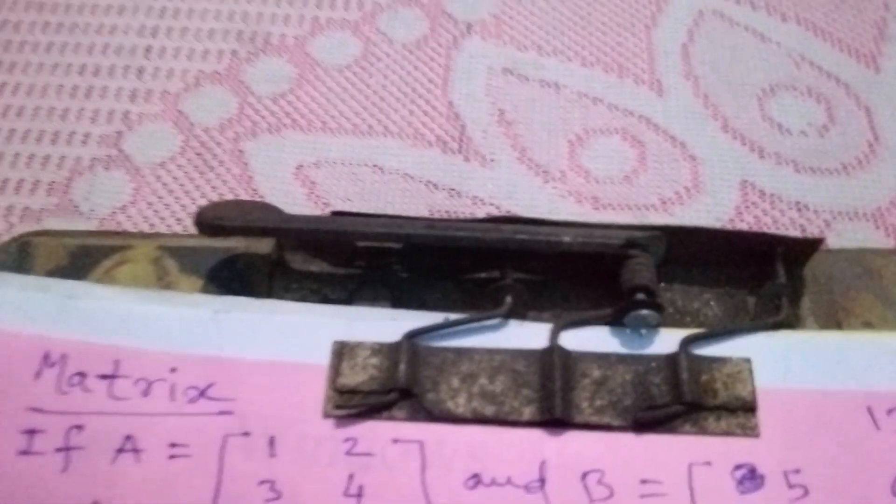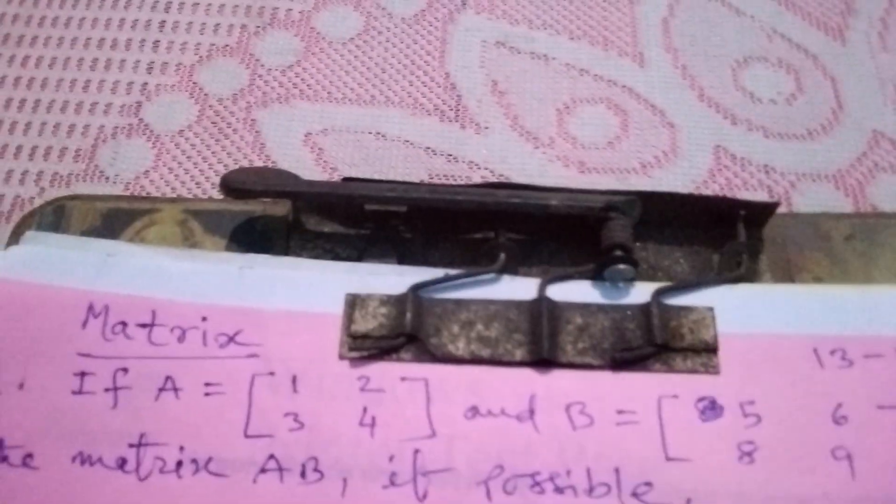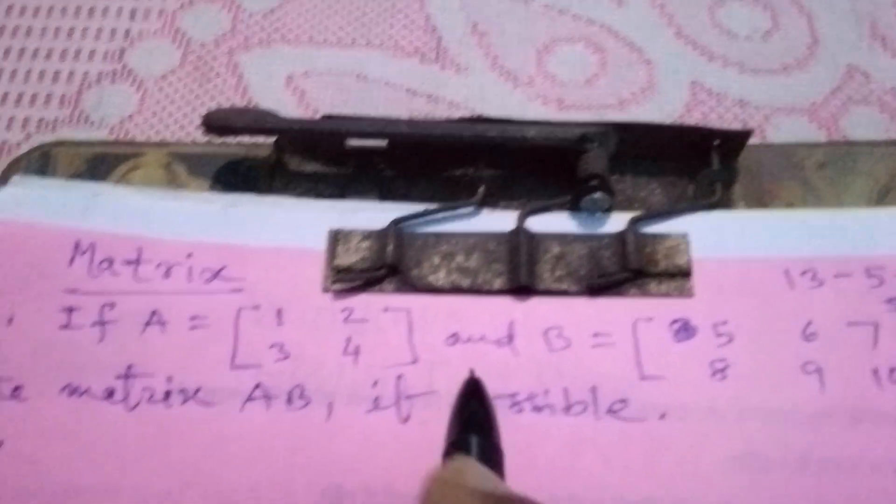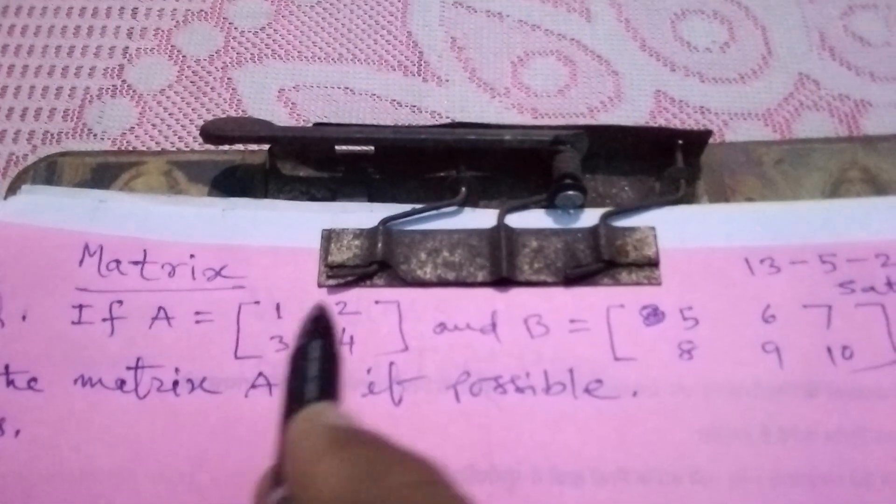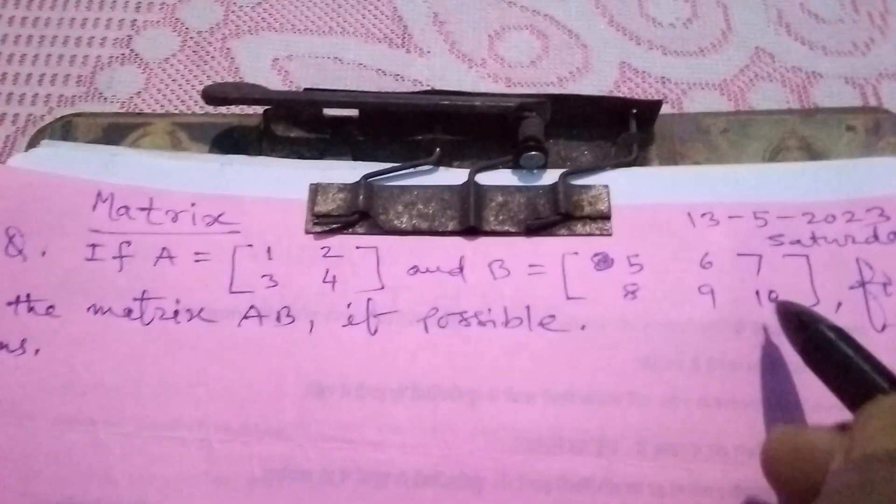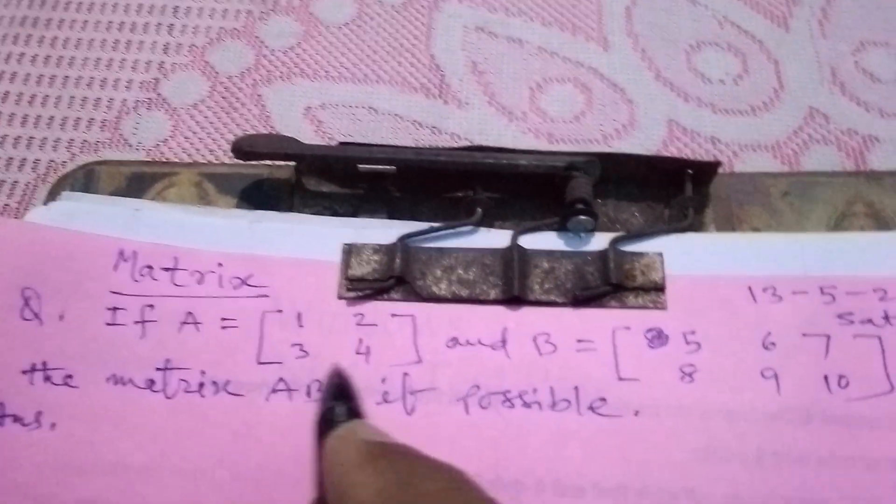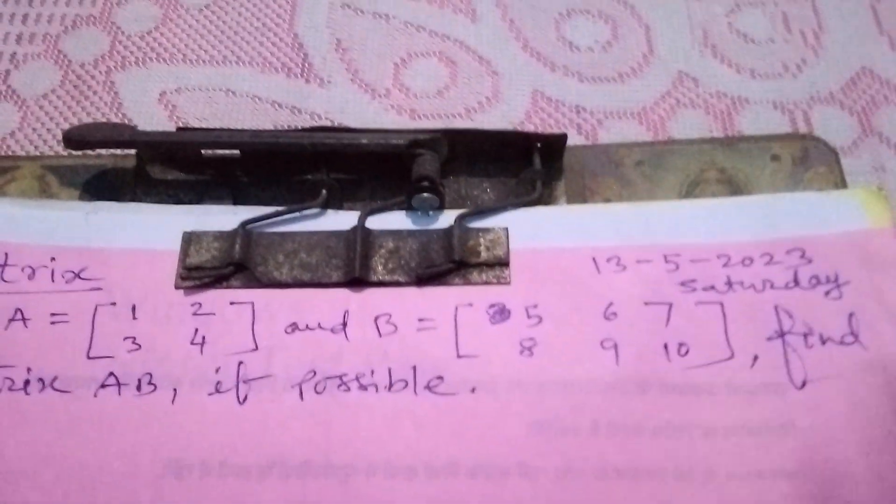Dear students, today I am going to explain you one sum of matrix, that means how to find the product of two matrices. Here the question is if A equals to 1, 2, 3, 4 and B equals to 5, 6, 7, 8, 9, 10. That means A is 2 by 2 matrix and B is 2 by 3 matrix.